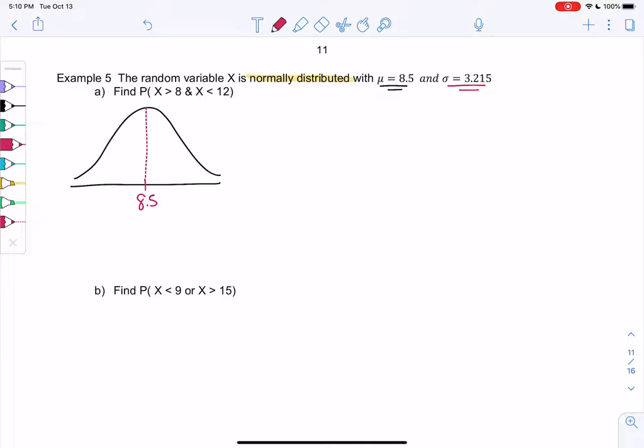So let's find the probability that x is greater than 8, so 8 will be right here, greater than we shade to the right. And x is less than 12. So 12 is somewhere over here.